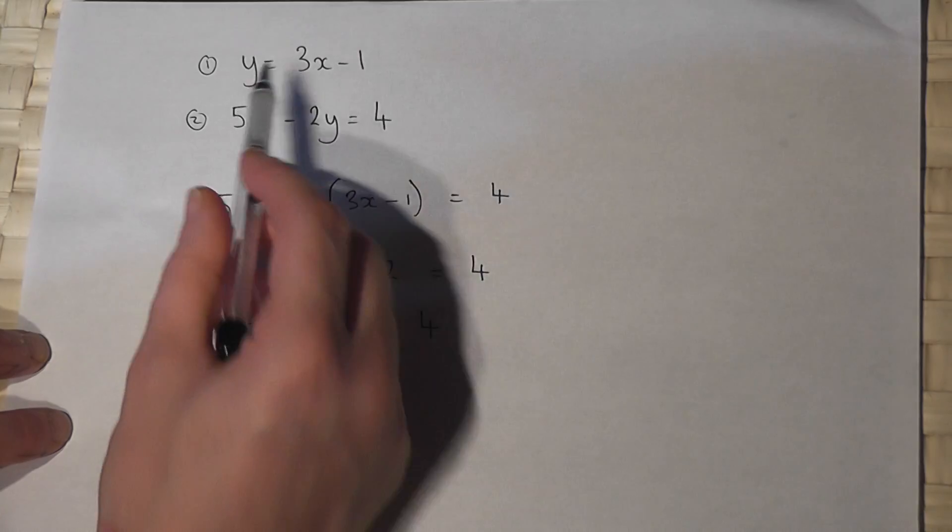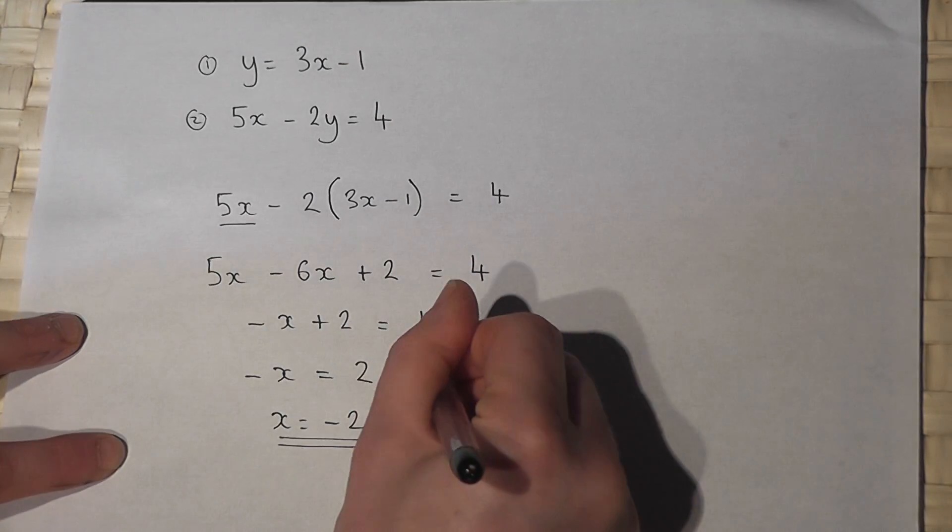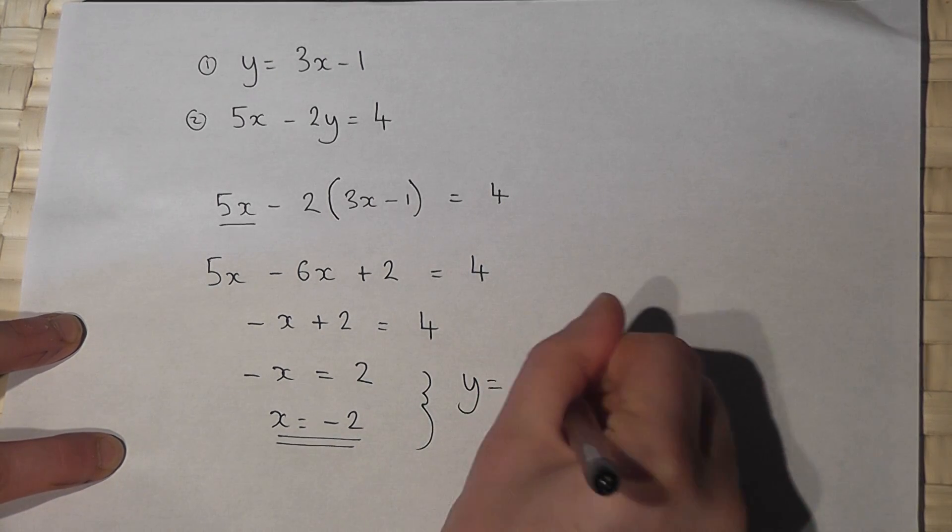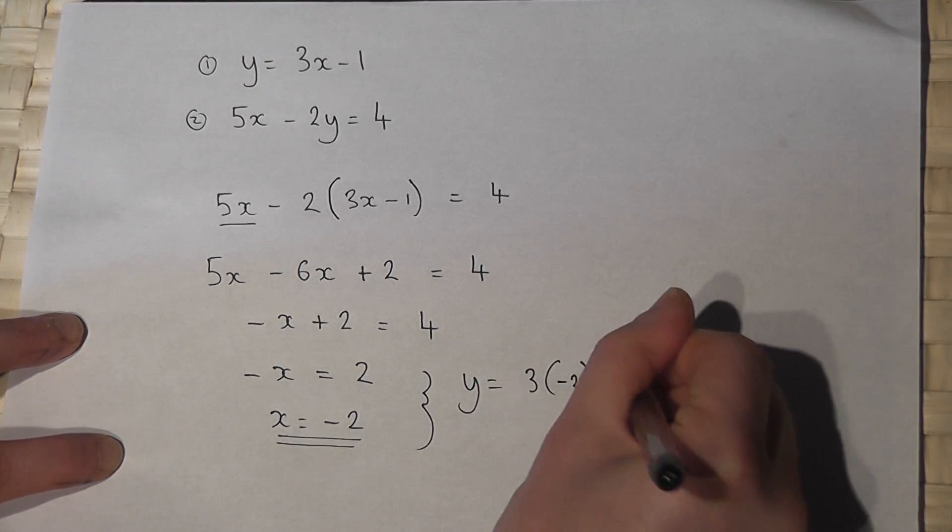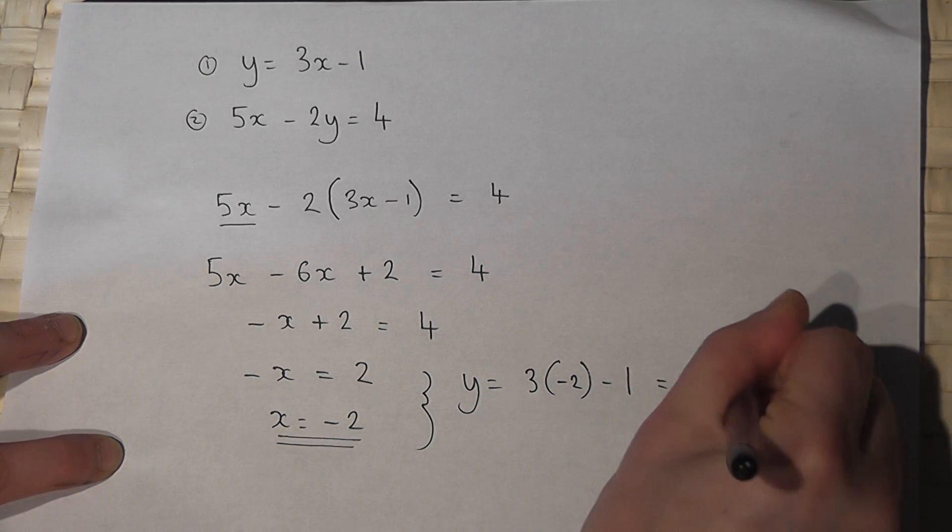And then finish by finding y. But that's not difficult because I've got y equals in terms of x. So therefore, that tells me that y just equals 3 lots of minus 2, take away 1. 3 times minus 2 is minus 6, take away 1.